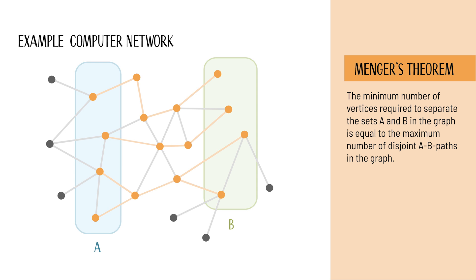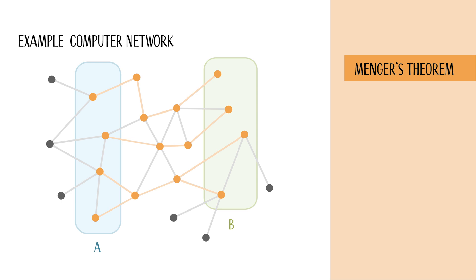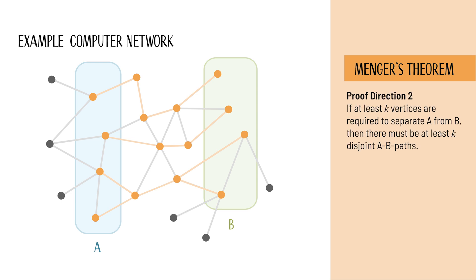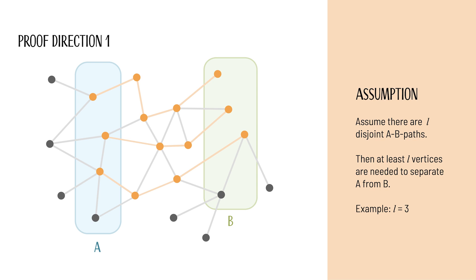We will show this by proving that each of these two numbers is at least as large as the other. The proof therefore has two directions. First, if there are L disjoint AB paths, then we need L vertices to separate A from B. Conversely, if at least K vertices are required to separate A from B, then there must be at least K disjoint AB paths. Assume there are L disjoint AB paths. Then at least L vertices are needed to separate A from B. This is the straightforward direction of the proof. It is clear that fewer than L vertices cannot separate A from B.